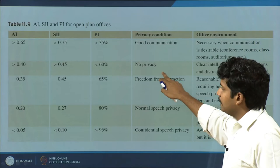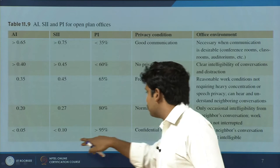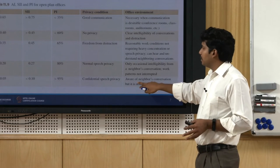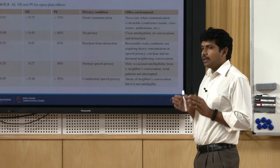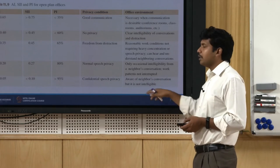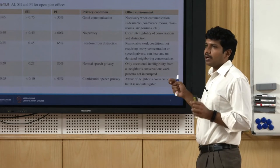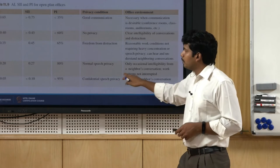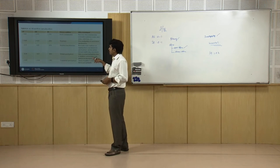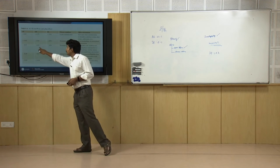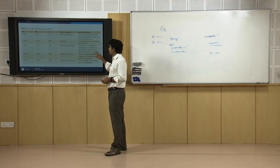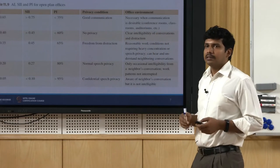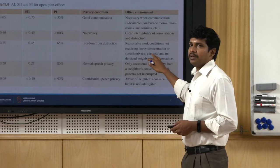If speech intelligibility is greater than 0.4, there is no privacy. If you come as low as 0.1, you have confidential speech privacy. Even at 0.1 or less, the person is aware that a conversation is happening — it is not a blanket insulation. You know some conversation is going on but it is not intelligible. At 0.2–0.3, occasional intelligibility occurs but work patterns are not interrupted. At 0.35–0.45, you can hear and understand what the neighbour is saying — a common phenomenon in open offices where you can clearly hear someone on the phone four or five cubicles away.